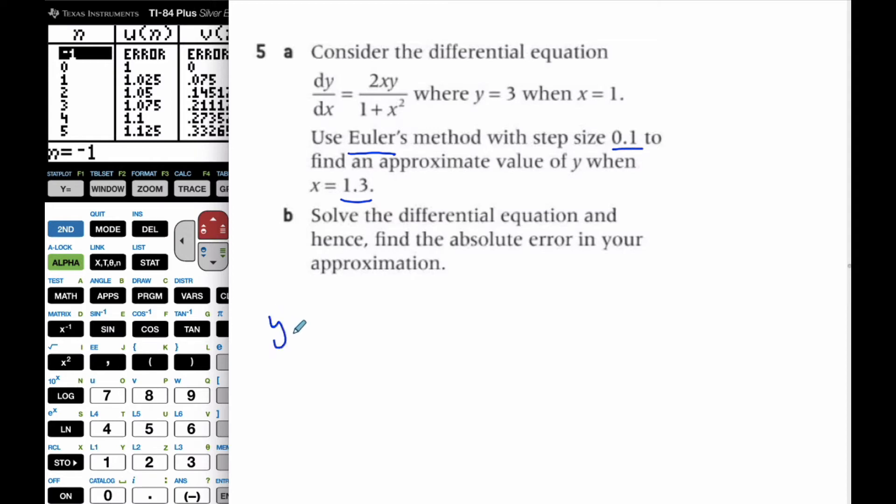So what Euler's method says is y_n is y_(n-1) plus h, which is my step, times the derivative of whatever my x and y value is for the value previous to y sub n.